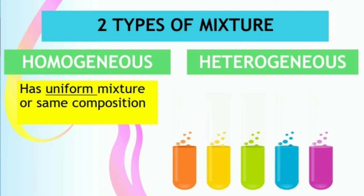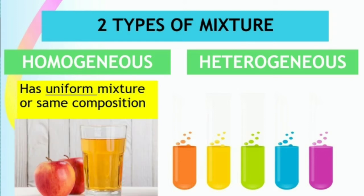Identifying a mixture is pretty easy — by just looking at the mixture, you can easily identify whether it is homogeneous or heterogeneous. 'Homo' means one, therefore one indication that a mixture is homogeneous is if it has one phase or one color throughout its composition. For example, this apple juice — you can clearly see one phase or one color throughout its composition.